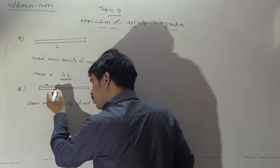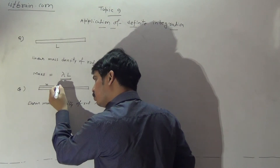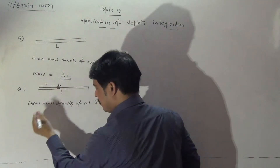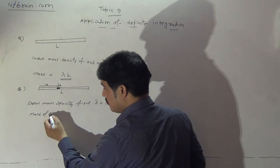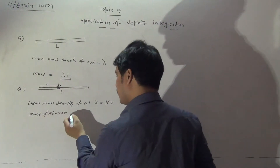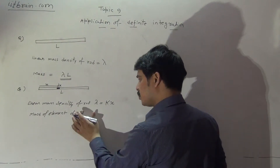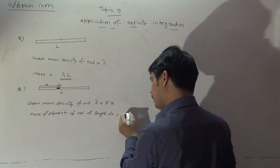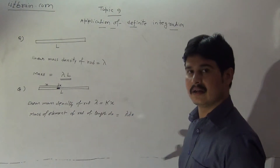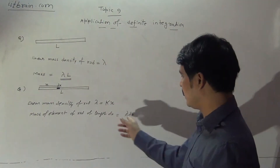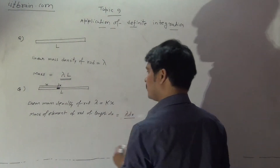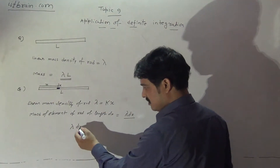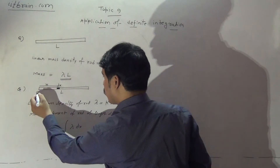At a distance x from the end, consider a small segment of the rod whose length is dx. The mass of this small element equals λ × dx, since mass per unit length is λ. So the mass of the element of rod of length dx is λ dx. The net mass of the rod is the integral of λ dx from one end to the other, from 0 to L.